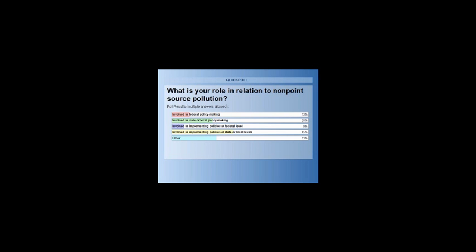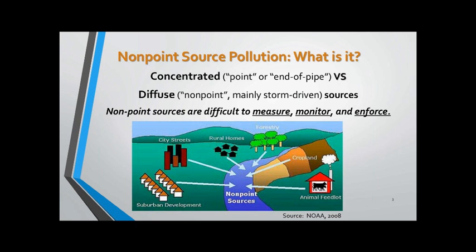What is non-point source pollution? The Clean Water Act provides a distinction between concentrated sources of pollution and dispersed or diffuse sources of pollution. Diffuse sources are those that arise from landscape-based sources through wind or storm activity for the most part. They are distinctive in that they are very difficult to measure, monitor, and enforce. It's tough to know where the pollution is coming from, what activities are giving rise to it, and where it is going.